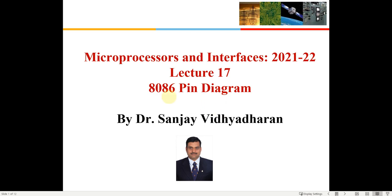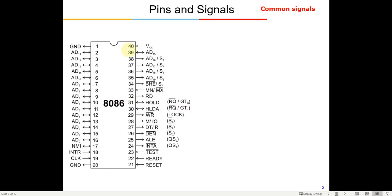In today's class we are going to learn about the pin configuration of 8086. The 8086 is a 40-pin IC with pins on both the longer sides. On pin number 1 and pin number 20 we give ground, and pin number 40 is used to provide the 5-volt power supply to the IC.